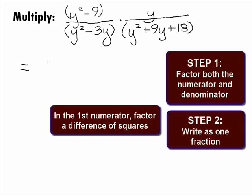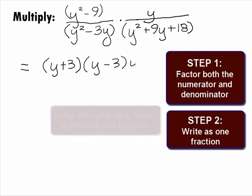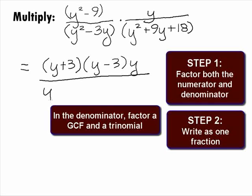Since y squared minus 9 is a difference of two squares, that first numerator can factor as y plus 3 times y minus 3. The second numerator of y will remain y. In the first denominator, we can factor out a greatest common factor of y and get y times y minus 3. The second denominator is a trinomial that will factor as y plus 6 times y plus 3.